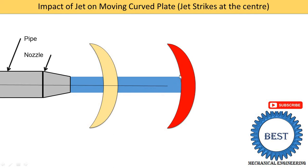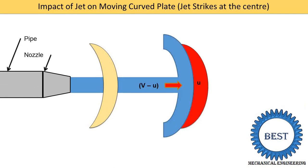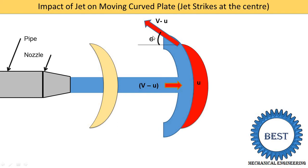After striking, the water leaves from the surface of the curved plate from the other side, leaving at a certain angle theta, as already learned. It is exhausted at angle theta, and its speed is the same as at striking — that is, v minus u — because we consider the surface of the plate to be smooth. When the surface is smooth there are no friction losses, so the jet leaves at the same velocity it struck, at angle theta with the horizontal direction from the other side.